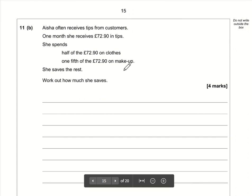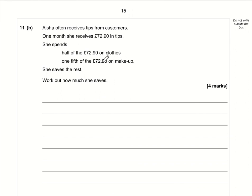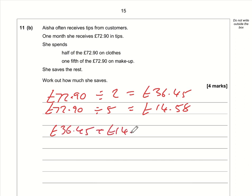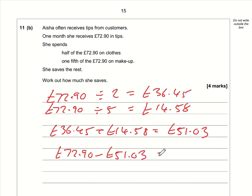Part b: half of £72.90 is £72.90 ÷ 2 = £36.45. A fifth of £72.90 is £72.90 ÷ 5 = £14.58. Total spent: £36.45 + £14.58 = £51.03. Amount saved: £72.90 − £51.03 = £21.87.